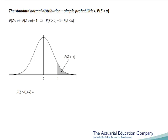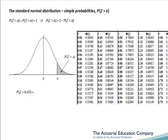For example, suppose we wish to calculate the probability that z is greater than 0.47. Looking at the tables, we find 0.47, and the probability that corresponds to it is 0.68082. Now this is the less than probability, and so we do 1 minus 0.68082. So the greater than probability is 0.31918. Fantastic! We can now use the tables to get both less than and greater than probabilities.